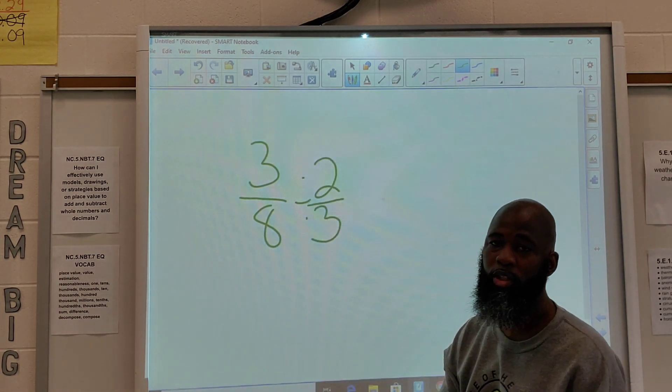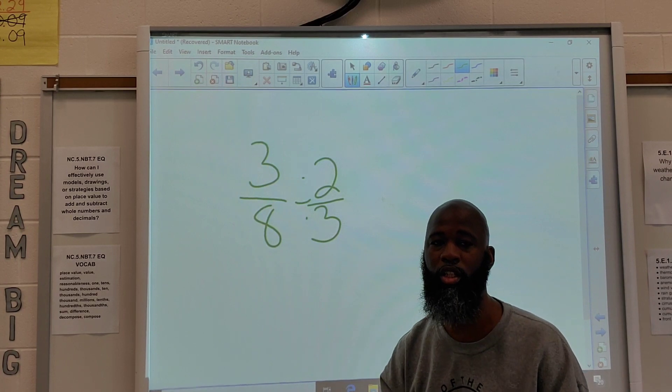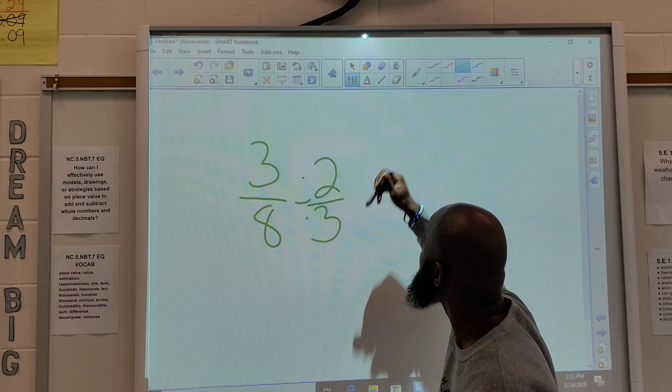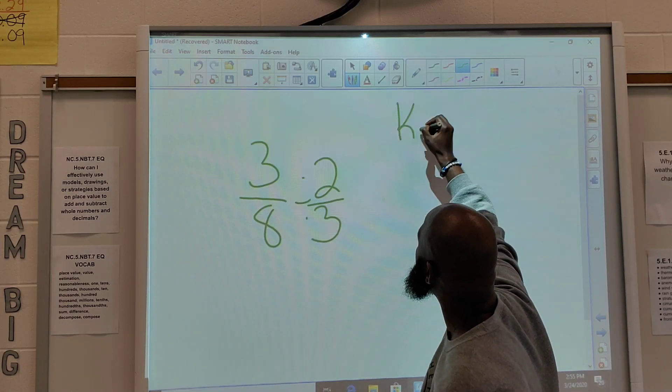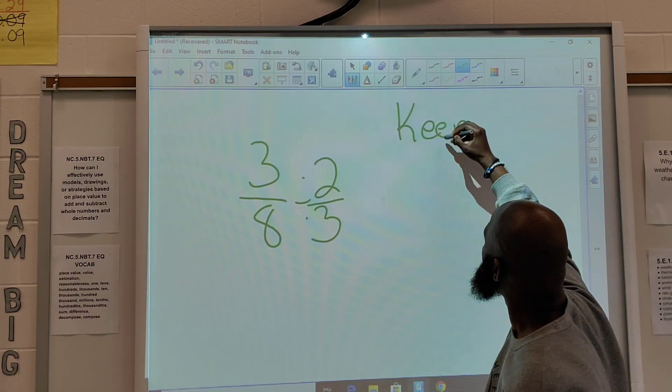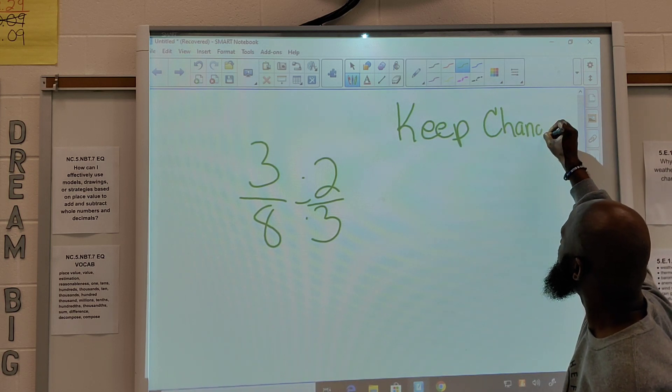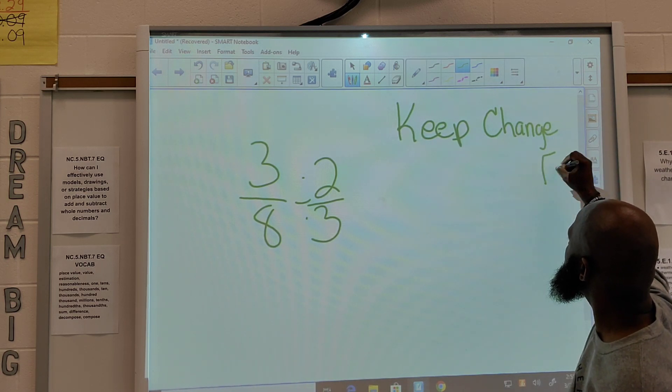Now, although we're using a different strategy, the answer should still result in the same if we do it correctly. Alright? So, now we keep, change, flip. That means we're going to keep something, we're going to change something, and then we're going to flip something.